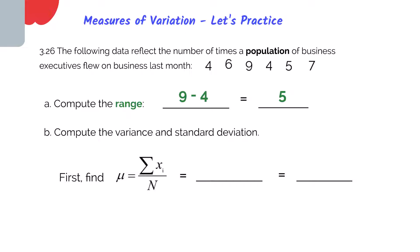As we know, the range is a simplistic form of variation. So in B here, we're going to compute the variance and the standard deviation. We first must get our mean or our average.